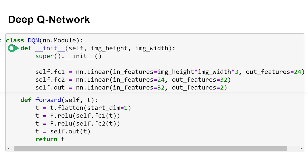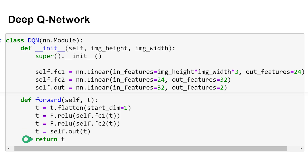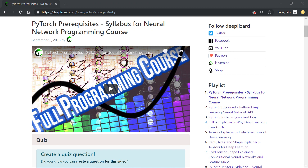The last thing we have to do for our DQN class is define a function called forward, which implements a forward pass through the network. All PyTorch neural networks require an implementation of forward. For any particular image tensor T passed to the network, T will first be flattened before being passed to the first fully connected layer. Then T is passed through that first layer and ReLU is applied. This result is passed to the second fully connected layer, and ReLU is applied again. This result is then passed to the output layer, and the result from the output layer is what is returned by the forward function.